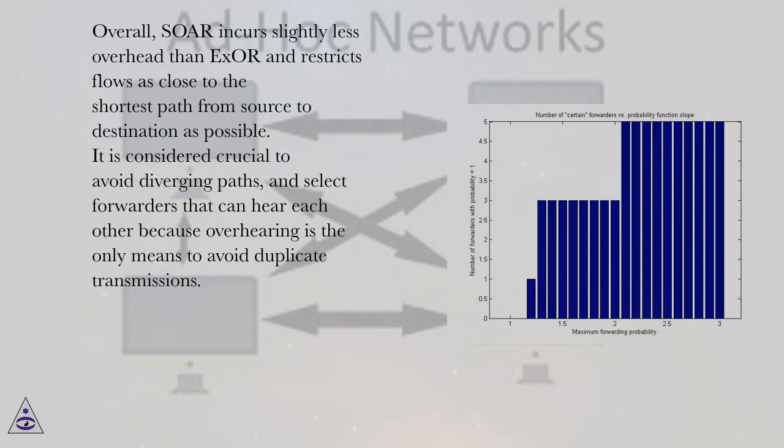Overall, SOAR incurs slightly less overhead than ExOR and restricts flows as close to the shortest path from source to destination as possible. It is considered crucial to avoid diverging paths, and select forwarders that can hear each other because overhearing is the only means to avoid duplicate transmissions.